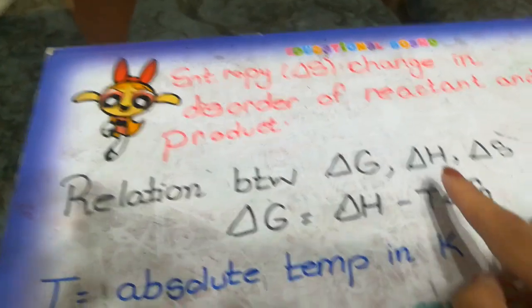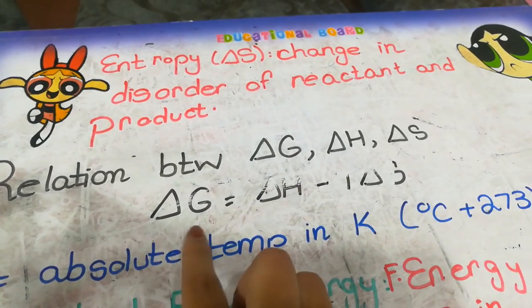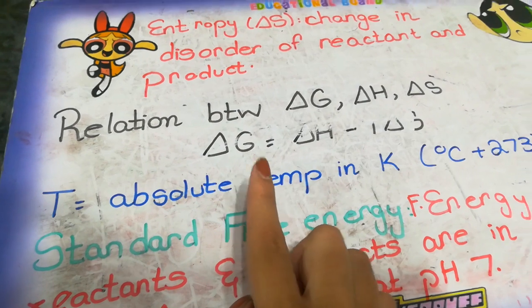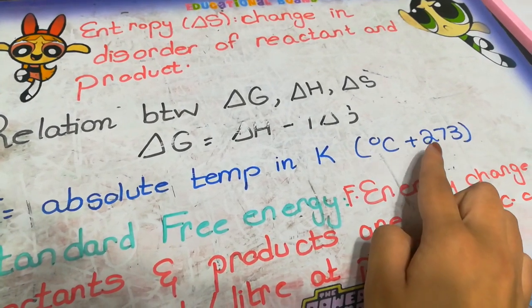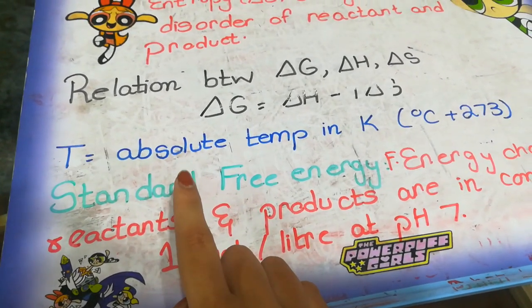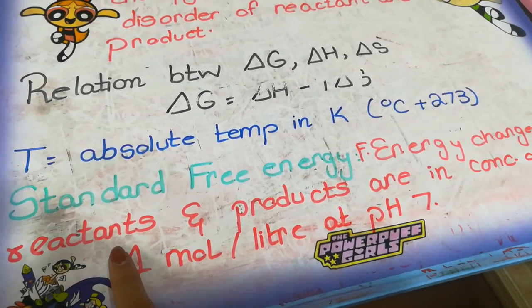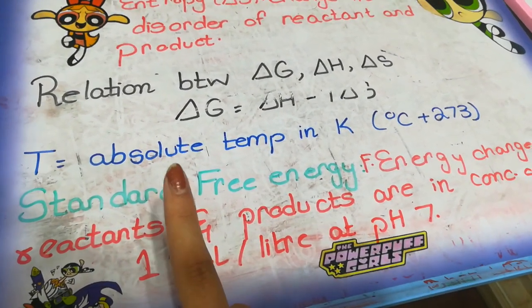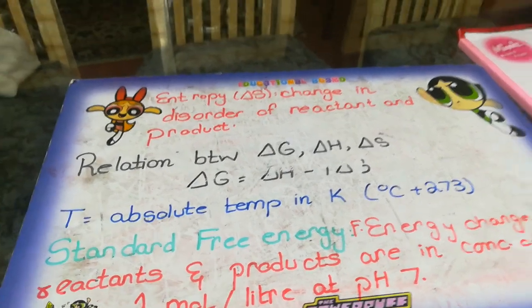The relation between free energy, enthalpy, and entropy is given by the equation: delta G equals delta H minus T times delta S. T is the absolute temperature at which the reaction takes place, usually measured in Kelvin — calculated as degrees centigrade plus 273 to get temperature in Kelvin. Standard free energy is the free energy available in the reaction when reactants and products are at a concentration of 1 mole per liter and pH is 7. That was all for my first lecture of biochemistry — hope it is understood. Thank you.